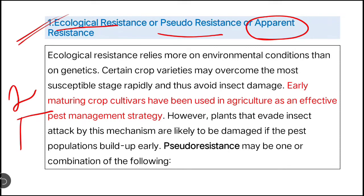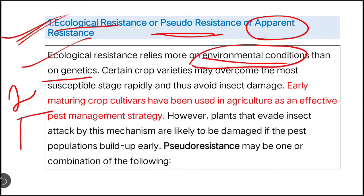Ecological resistance relates more on environmental conditions than on genetics. This type of resistance is not genetically determined. Certain crop varieties may overcome the most susceptible stage rapidly and thus avoid the damage.